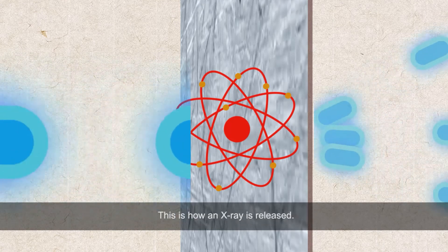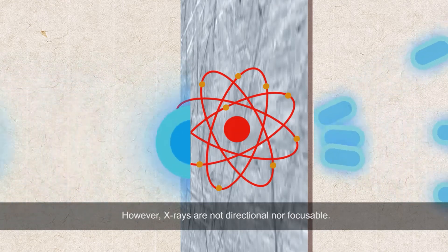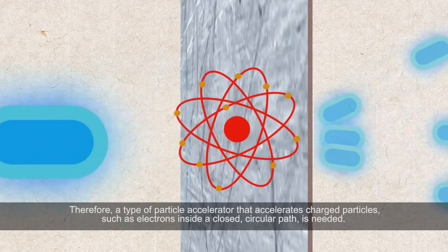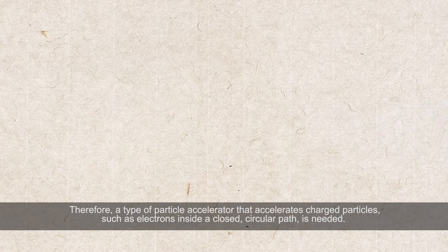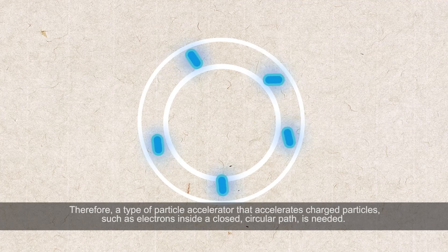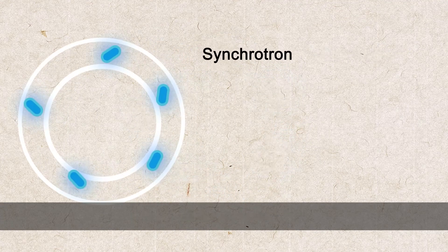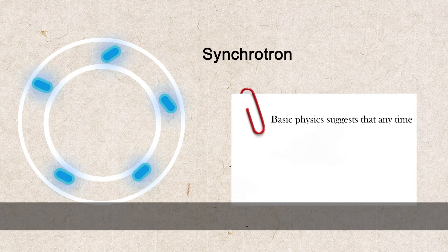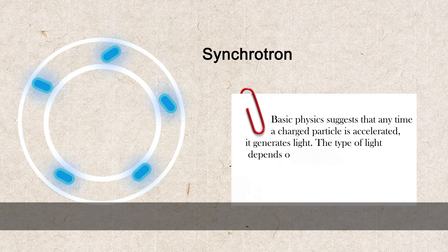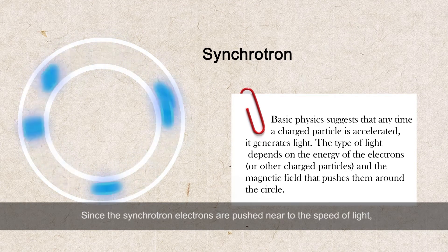For the atom to relax or return to equilibrium, an electron in the so-called 1P shell drops in to fill the gap. This is how an X-ray is released. However, X-rays are not directional nor focusable. Therefore, a type of particle accelerator that accelerates charged particles such as electrons inside a closed circular path is needed. This is a synchrotron.